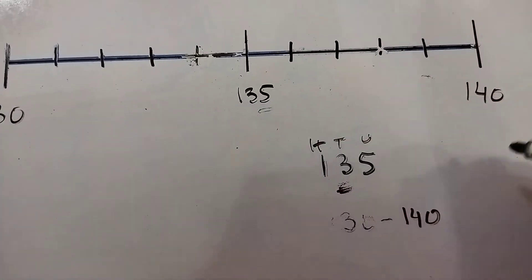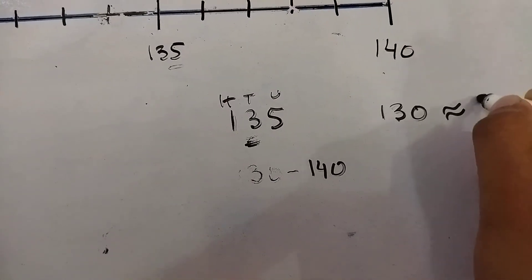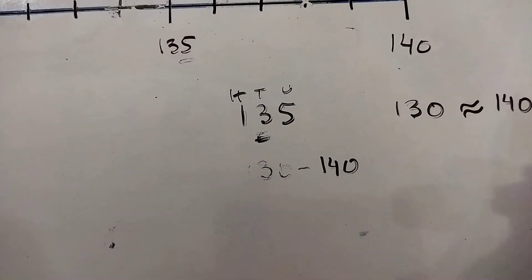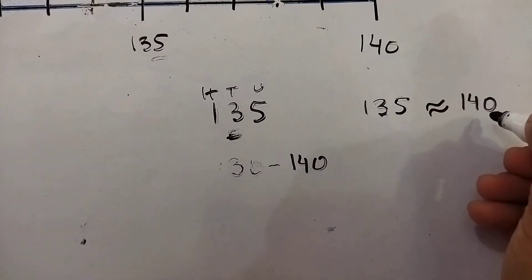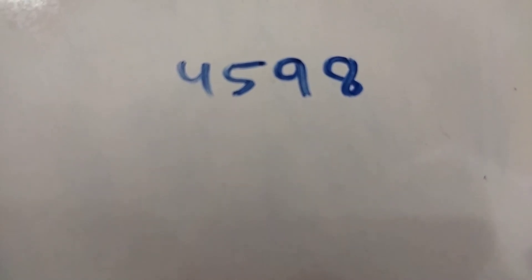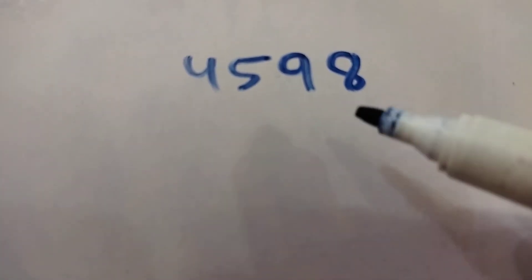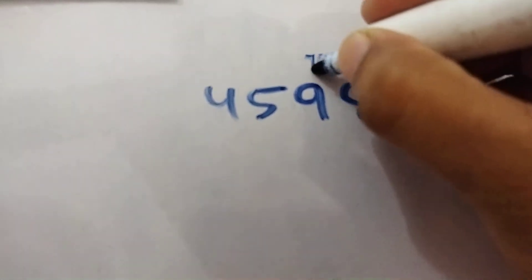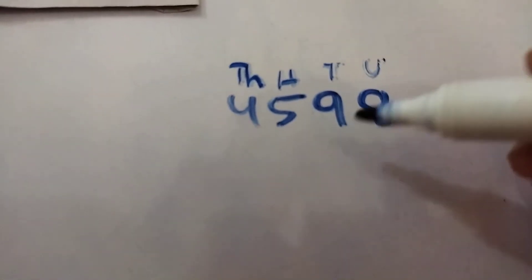So 135 is rounded off to 140, because from 5 onwards up to 9, all those digits cause the number to round up to the next tens digit. Now I have a new number: 4598, and I have to round it off to the nearest tens. First let's write down the place values: units, tens, hundreds, and thousands.